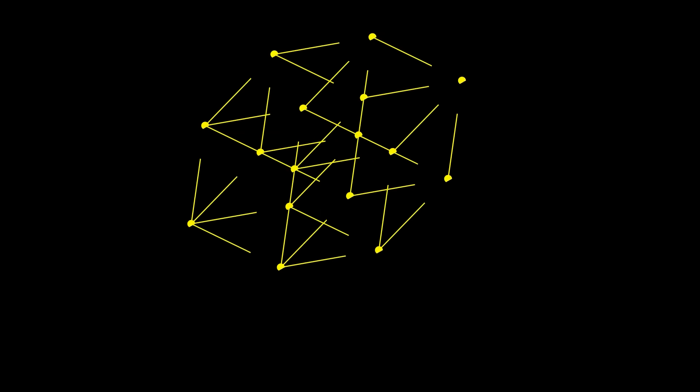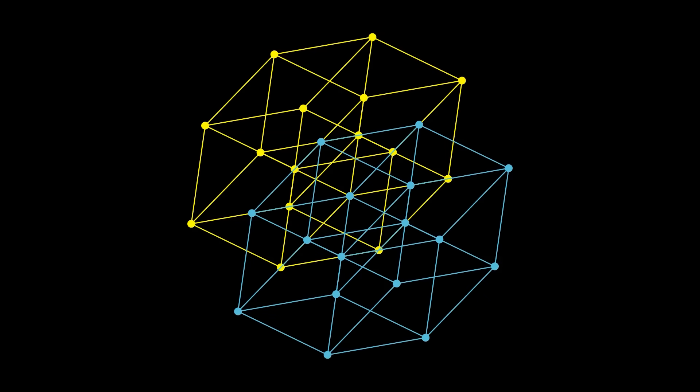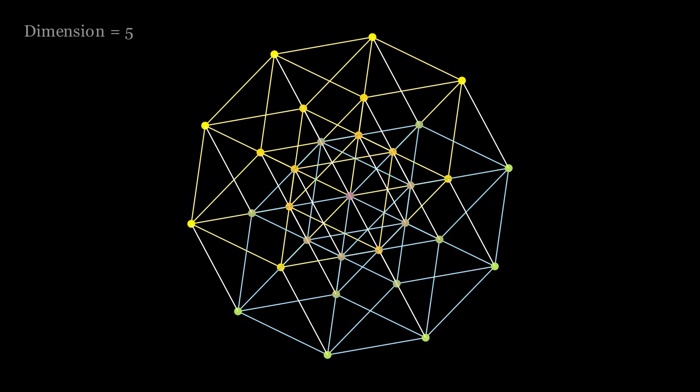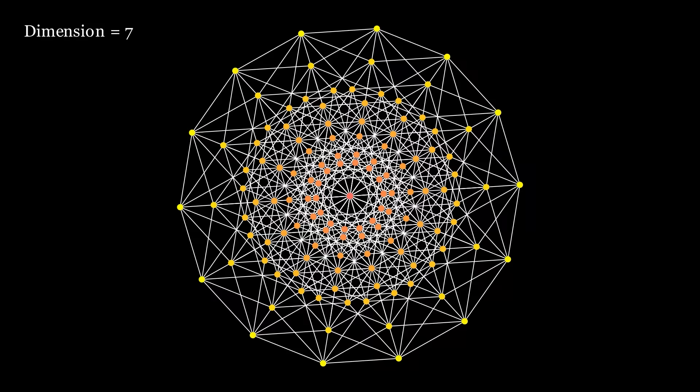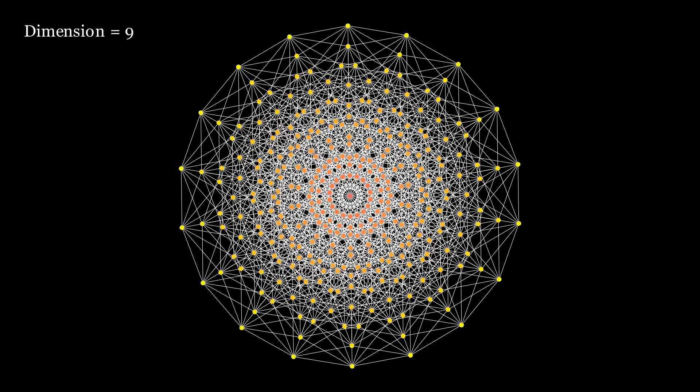And I can keep going. Start with the tesseract, double that, connect the vertices. This is called the pentoract, or a five dimensional hypercube, where I say hyper whenever I want to sound cool and talk about something with more than three dimensions. I can keep going to the six cube, the seven cube, all the way up to the ten dimensional cube.